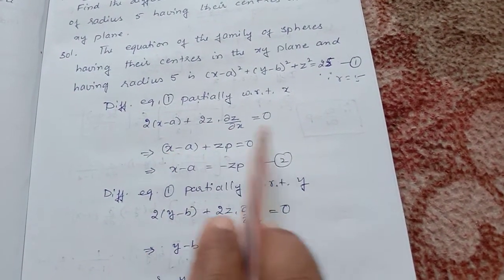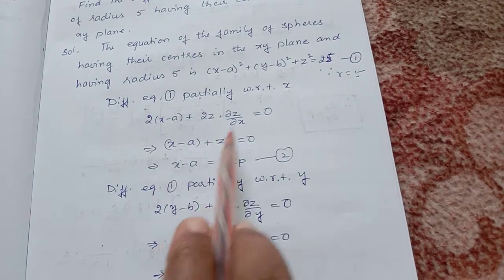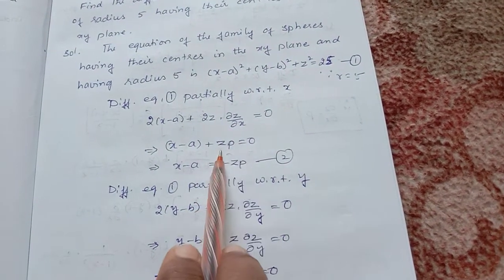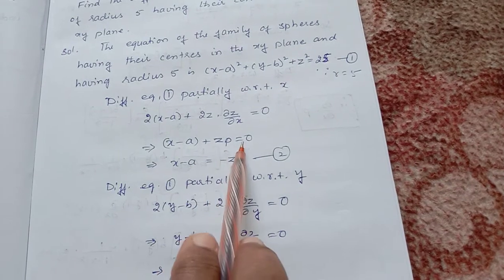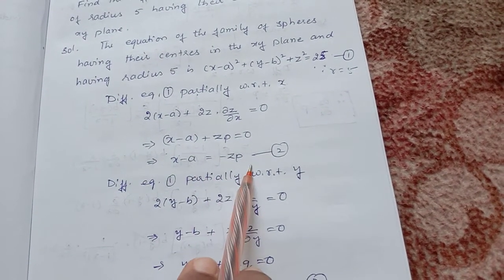Taking 2 common and sending to the other side, we get x - a + z(∂z/∂x) equal to 0, where ∂z/∂x value is p. So x - a equal to -zp. This is equation 2.